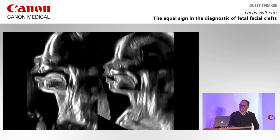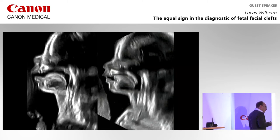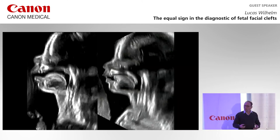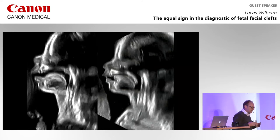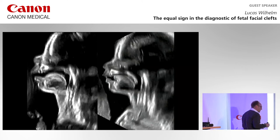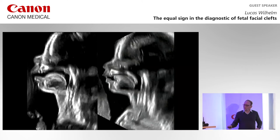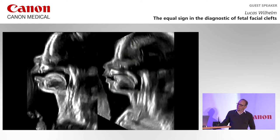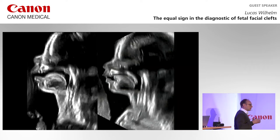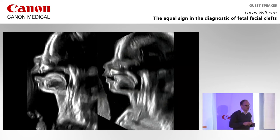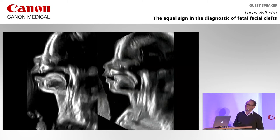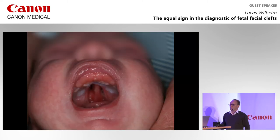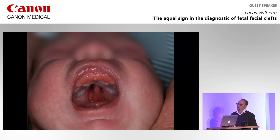What you also see in this case is a normal position of the tongue. That's very important for post-partum treatment because not all fetuses with isolated cleft palate have glossoptosis and a respiratory problem after birth — it's more a function of the mandible. If the mandible is quite okay and the position of the tongue is okay, you don't have to expect a respiratory problem after birth. You can clearly diagnose isolated cleft palate. After birth, it was confirmed: hard and soft palate cleft.